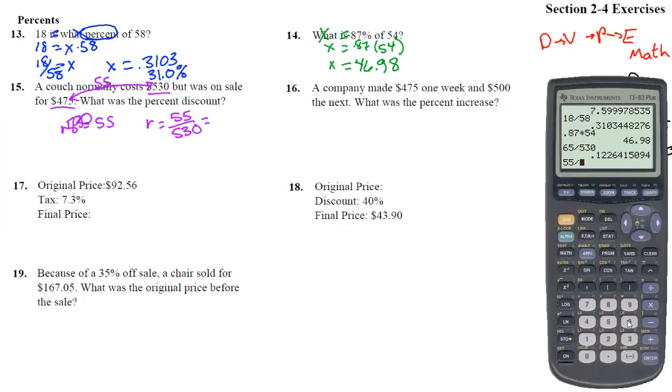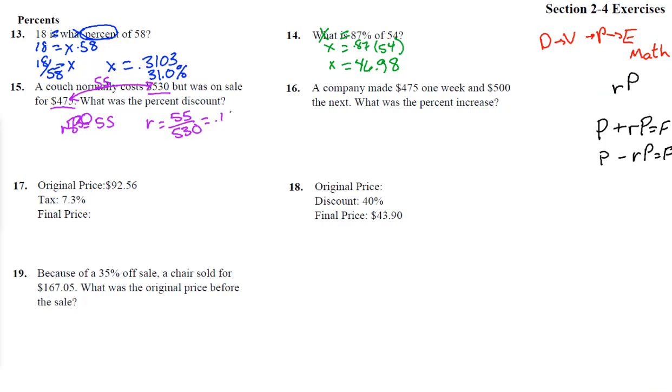So that's going to equal, let's pull up the calculator, 55 divided by 530, and that's 0.1038. Move the decimal two places, and we get 10.4% would be all right if we rounded to one decimal place after the percent.